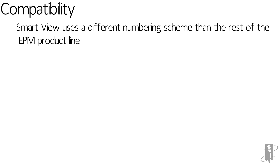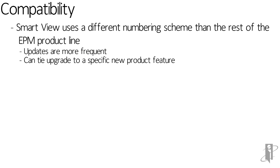Most of the EPM product line is on 11.1.2.4, some on 11.1.2.3.500 or .3, and OBIEE is on 11.1.1.9 right now. The reason they changed the numbering scheme for Smart View is to do updates more frequently without tying them to an EPM release. So if OBIEE gets new features, they can do a release specific to OBIEE, and if Essbase or Planning needs something, they don't have to wait for the whole product line to be updated.